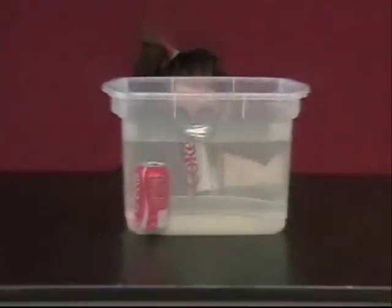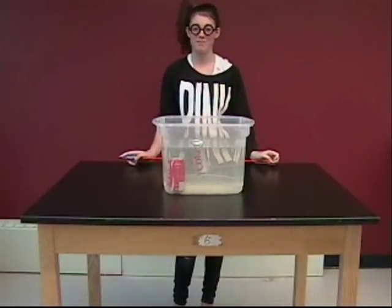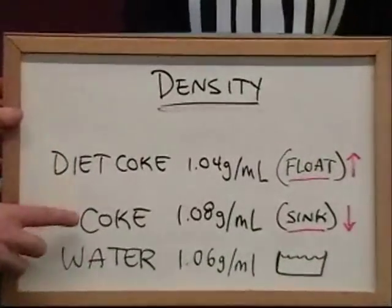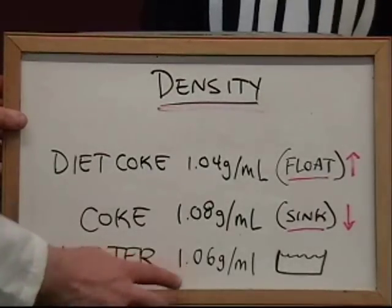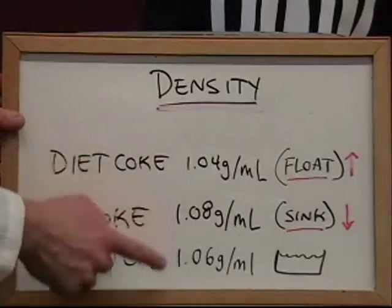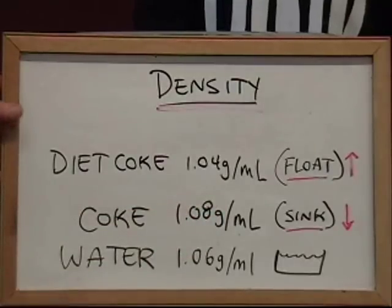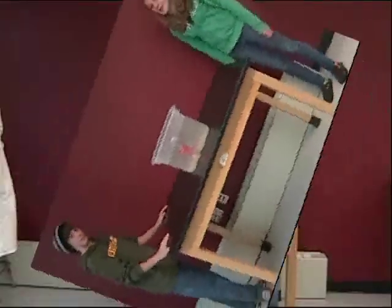Wow, that explains everything. Sure does, Connor. Let's have a look. Our Diet Coke's density is here. The density of the Coke is shown here. Our water has a density right in between, 1.06. Because the Diet Coke is less dense than water, it floats. The Coke has a higher density than water, which means it will sink. Wow, Brooke, we sure learned a lot about our objects today. I learned about mass, volume, and density. And I hope our video has helped the rest of you learn a little bit more about mass, volume, and density. And don't forget, science rules!